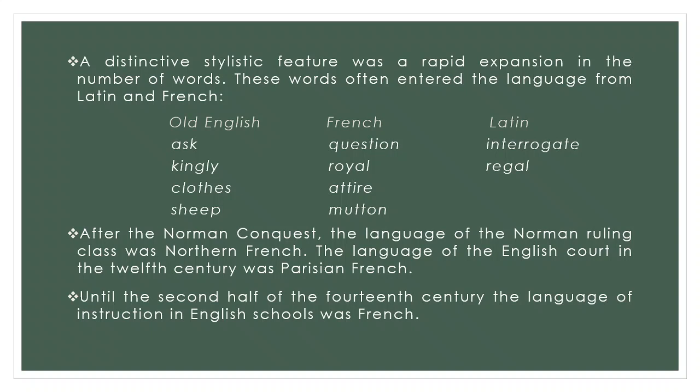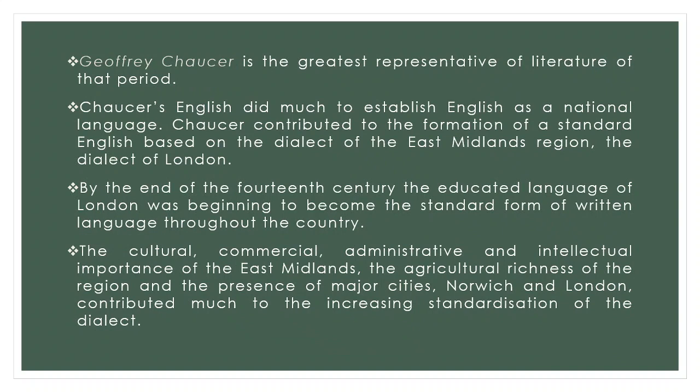After the Norman Conquest, the language of the Norman ruling class was Northern French. The language of the English court in the 12th century was Parisian French, which carried more prestige than Anglo-Norman. Until the second half of the 14th century, the language of instruction in English schools was French. Geoffrey Chaucer, one of the greatest representatives of English literature of that time, made a decisive contribution. The range and variety of Chaucer's English did much to establish English as a national language and contributed to the formation of a standard English based on the dialect of the East Midlands region — basically the dialect of London.